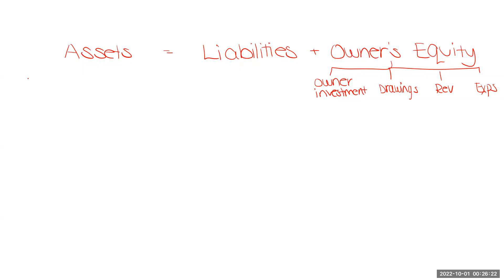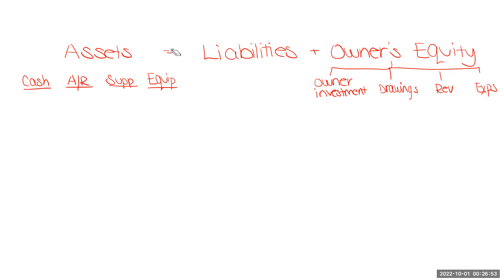Let's give ourselves some reasonable assets. And if you want a refresher of what assets are, go back to chapter two and either skim the chapter or watch some of those lecture videos. So: cash, accounts receivable, supplies, and maybe equipment as well. Lots of assets. For liabilities, let's have accounts payable for now. We can add more if we want.